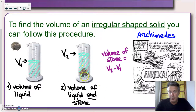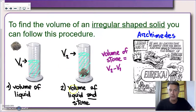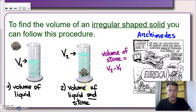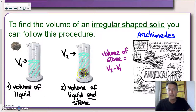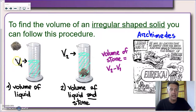At this point the level of the liquid will rise, giving you a new reading — call it V2. V2 is the volume of the liquid and the stone combined. Looking at these two measurements, it's clear how to proceed: the volume of the stone by itself is simply the difference between V2 and V1.